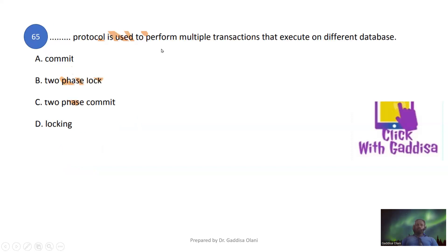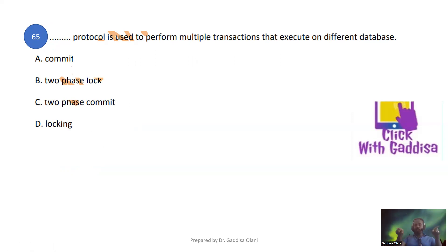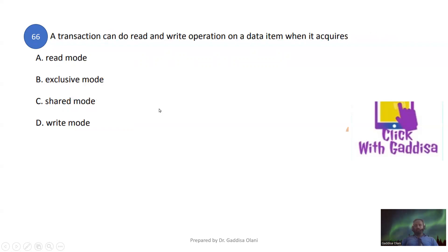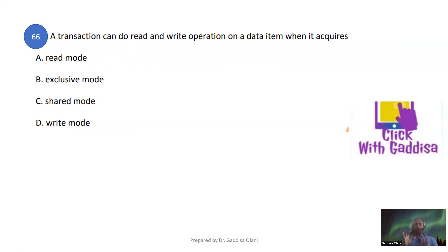The number of transactions executed in a given amount of time is called throughput. The two-phase commit protocol is used to perform multiple transactions that execute on different data items. If a transaction can do both read and write operations on a data item, it acquires an exclusive lock.